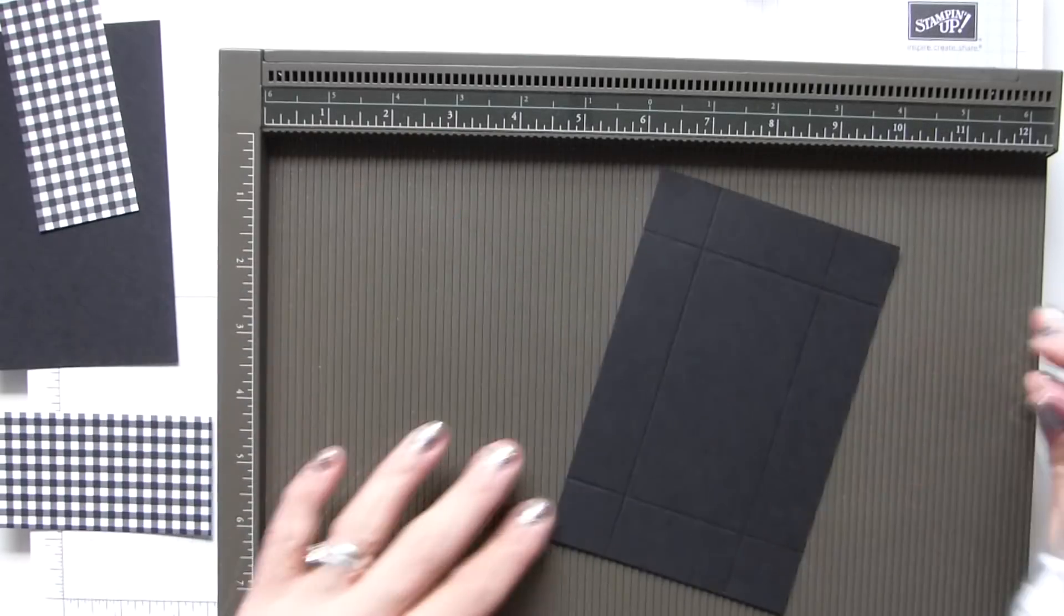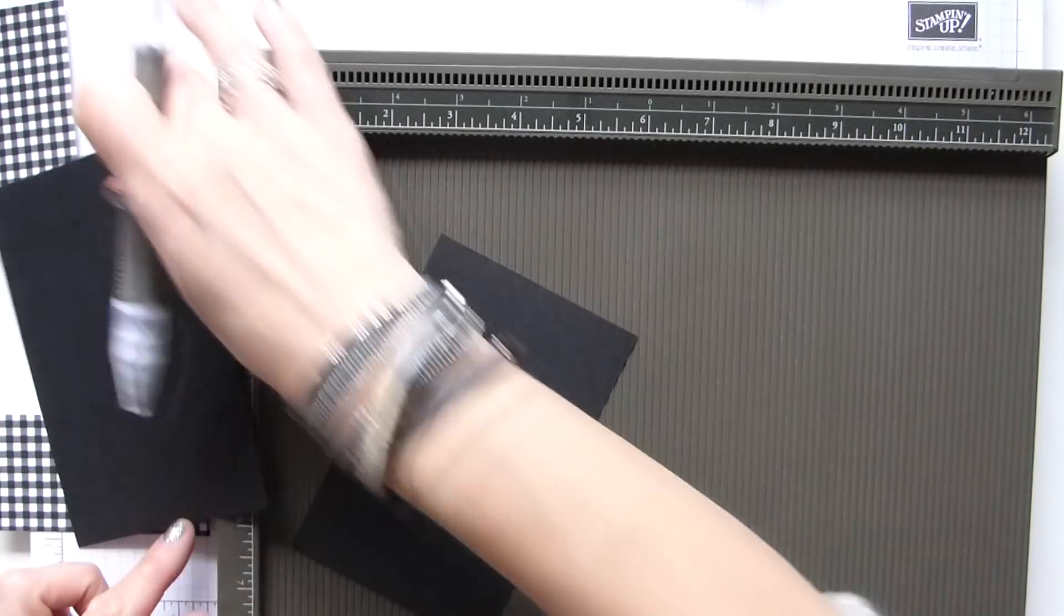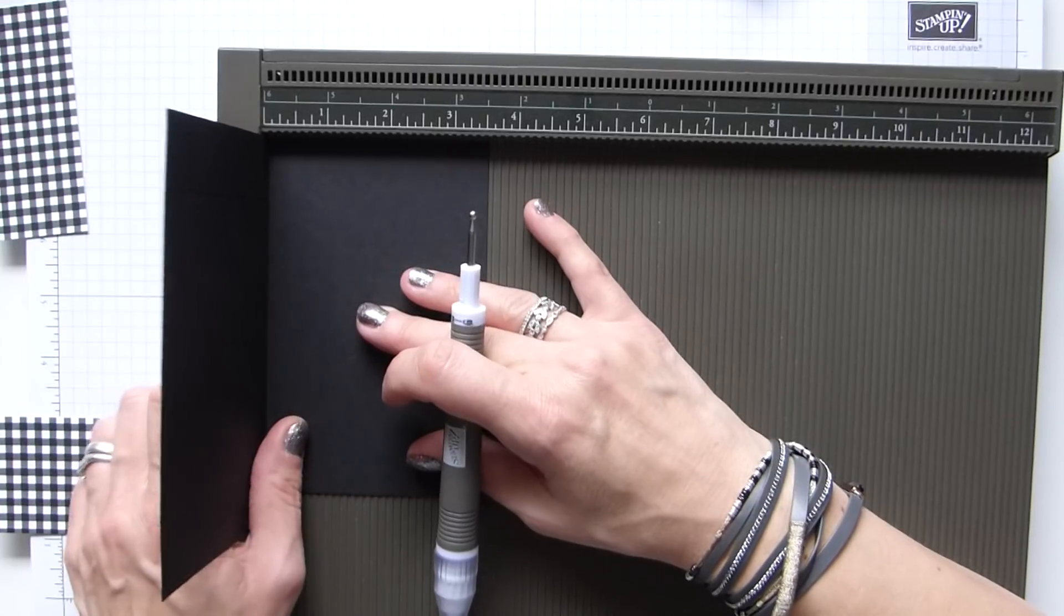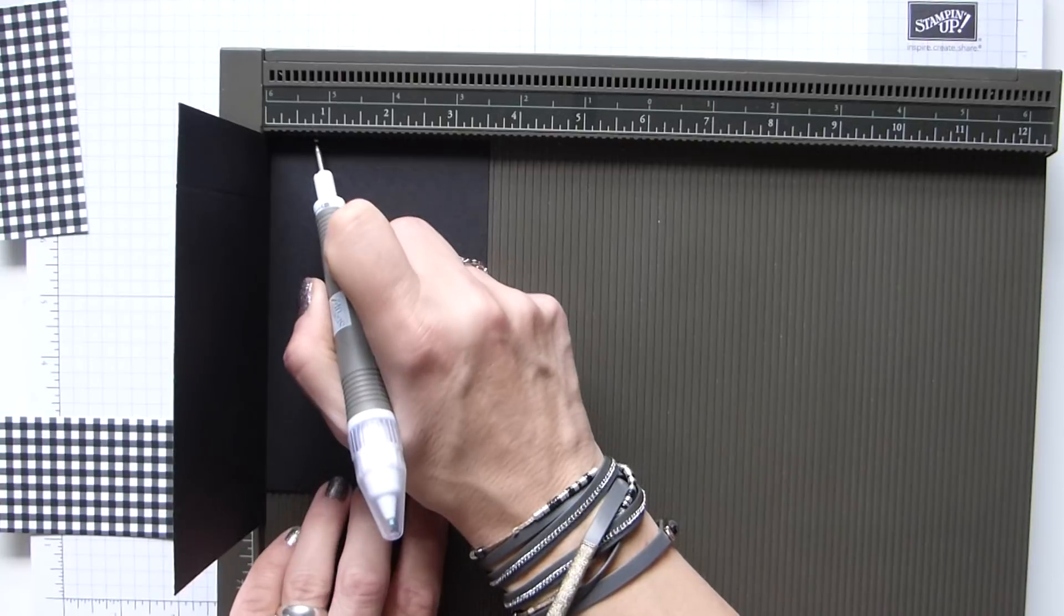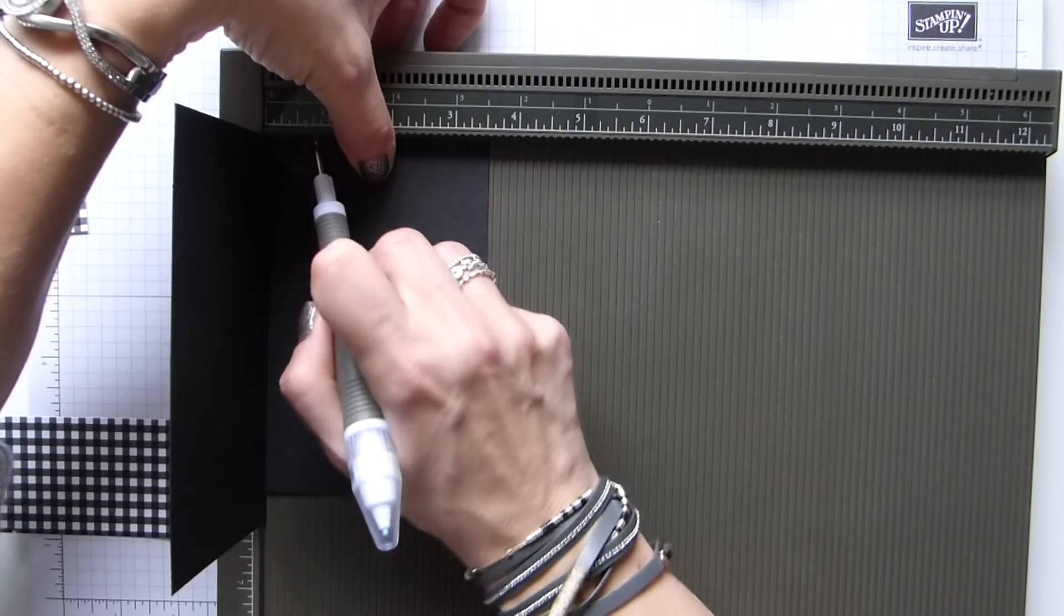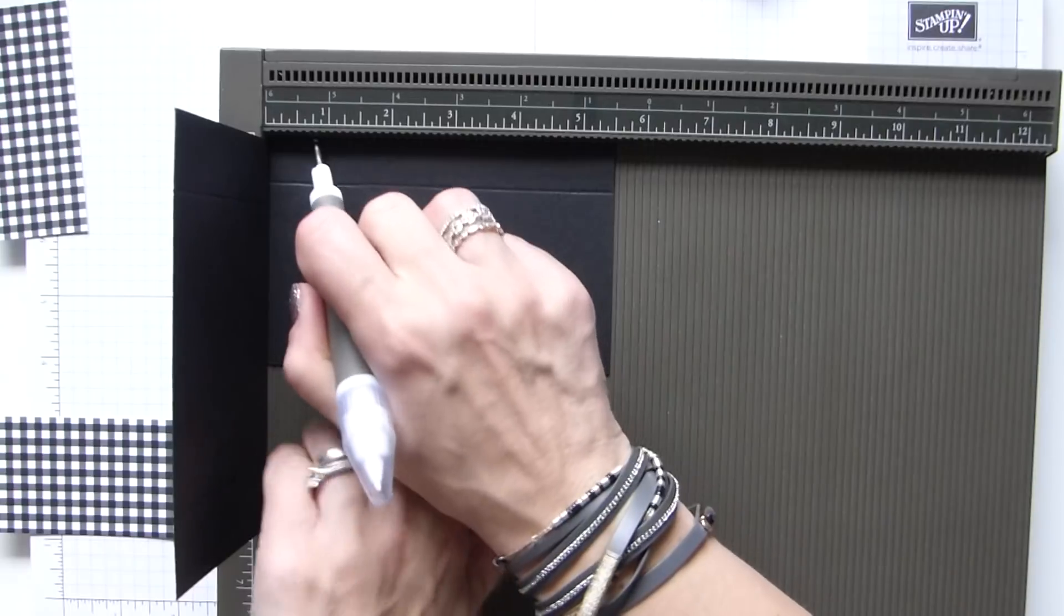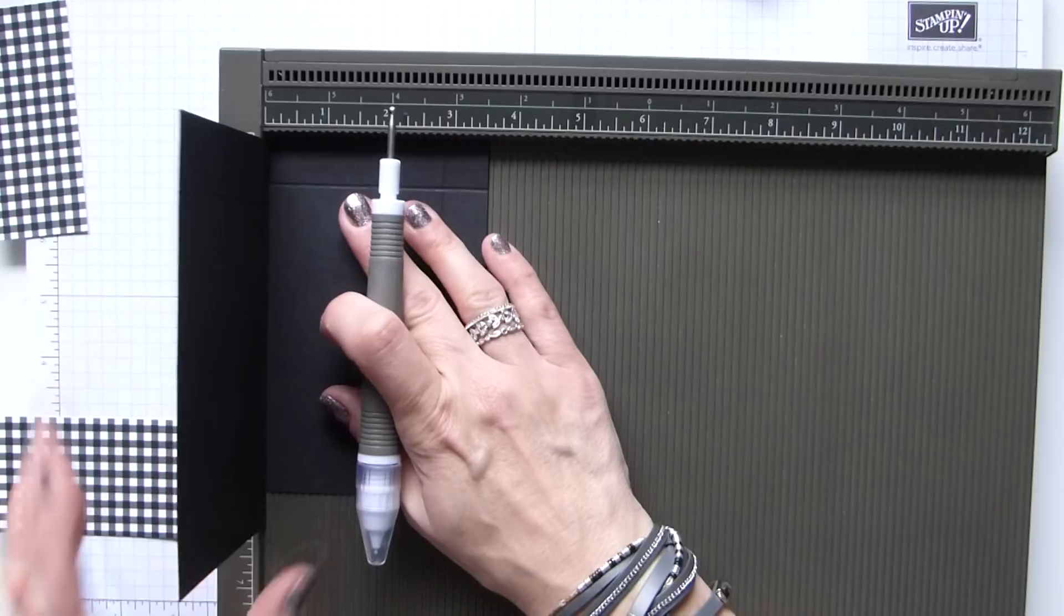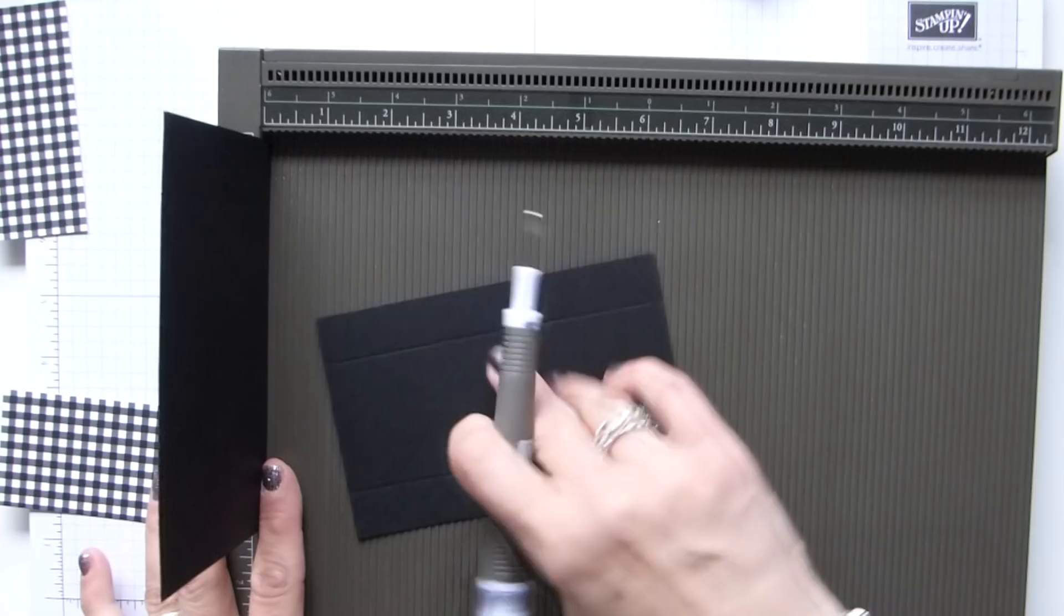So once we've done that, I'm actually going to use that as my shim and score my lid while I'm here. So my lid is 5.5 by 3.5 inches, which is 16 by 9 centimetres. And I'm going to score this one at three quarters of an inch, which is 2 centimetres. And again, I'm going to do that on all four sides. It's always quite hard to score a small measurement when you have a shim.